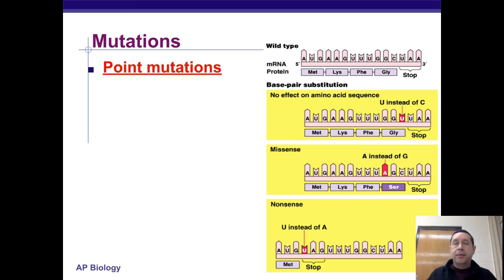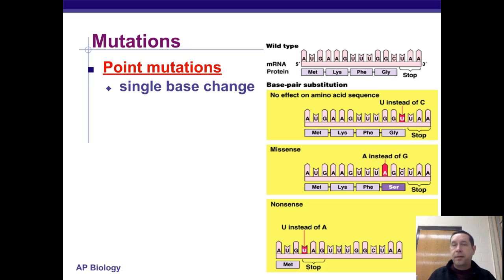There are different kinds of mutations. One type of mutation is called a point mutation, where one base in a gene is changed from the correct base to another one. In the example here, you can see there's a uracil that's replacing a cytosine.